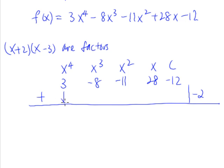So the first step we do, we bring down the 3. So 3 multiplied by negative 2 will give us a negative 6. So negative 8 plus negative 6, that will give us a negative 14.